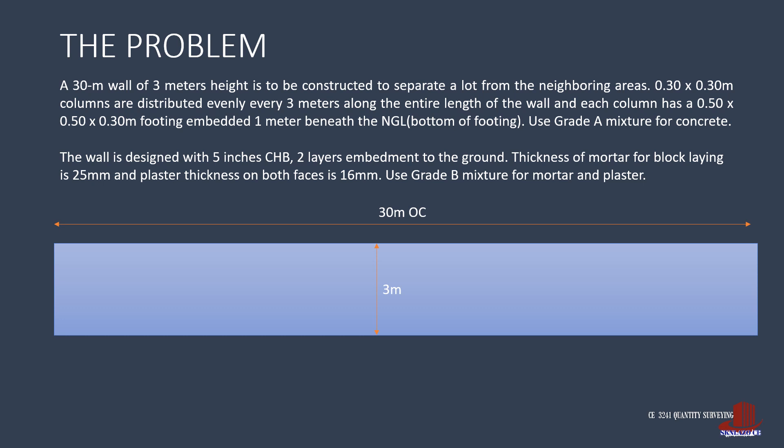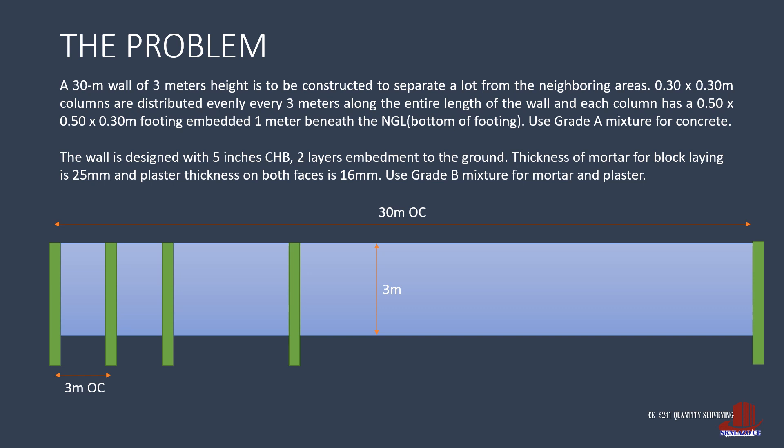To start the estimate, let's have a clear picture of the whole wall, which is 30 meters length. We assume the length is measured on centers unless otherwise stipulated. There are columns of 0.3 by 0.3-meter dimensions every 3 meters. Thus, there are 10 spans of the wall and also 11 columns which go through the natural grade line until connected to the footing, placed 1 meter deep. The bottom of the footing is at 1 meter from the natural grade line. The footings have similar sizes of 0.5 by 0.5 meters with a depth of 0.3 meters.